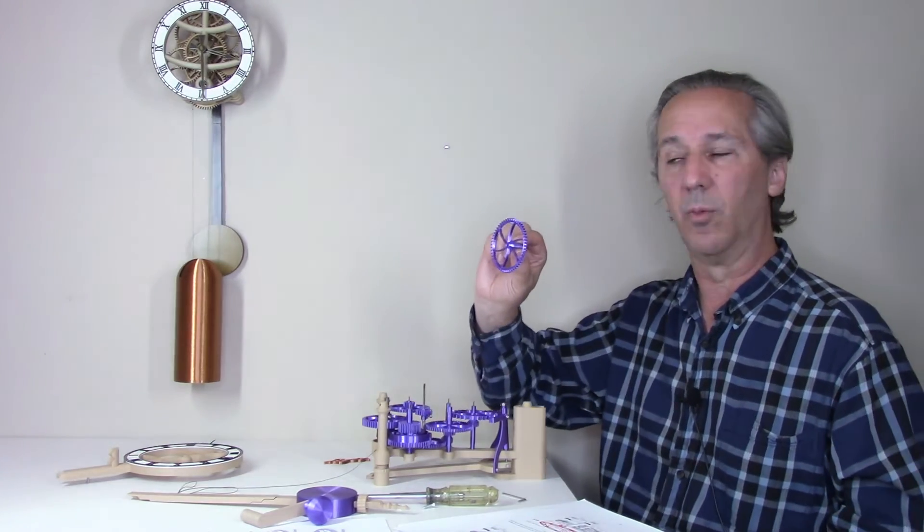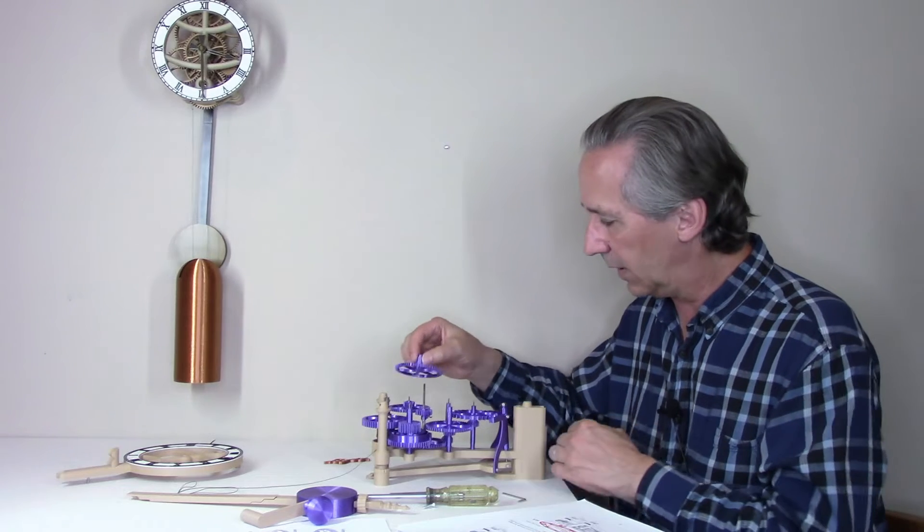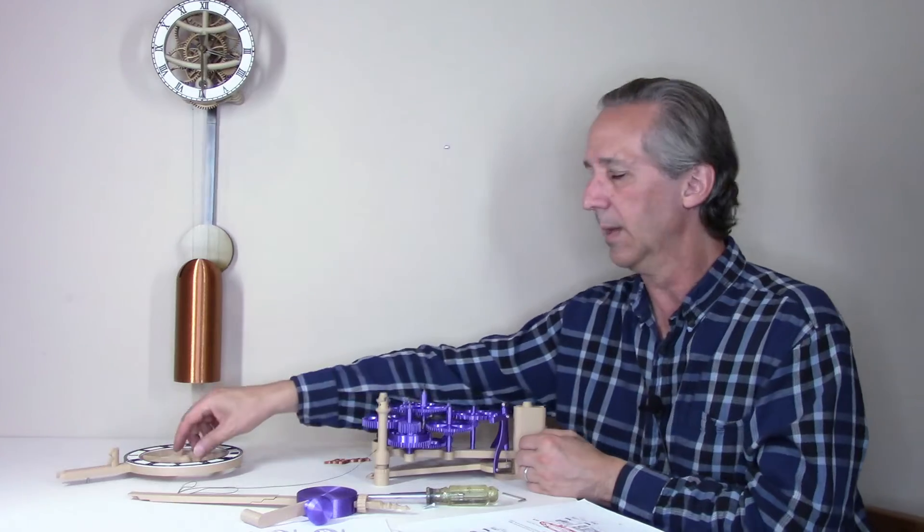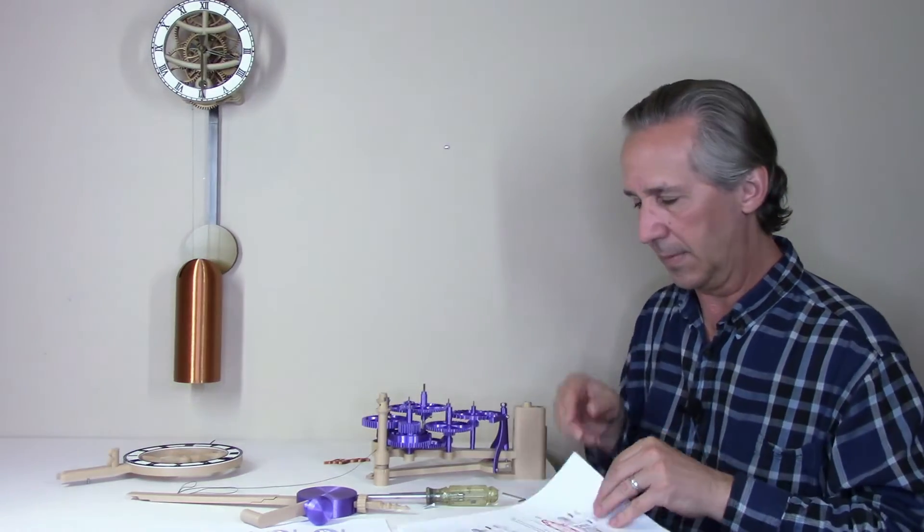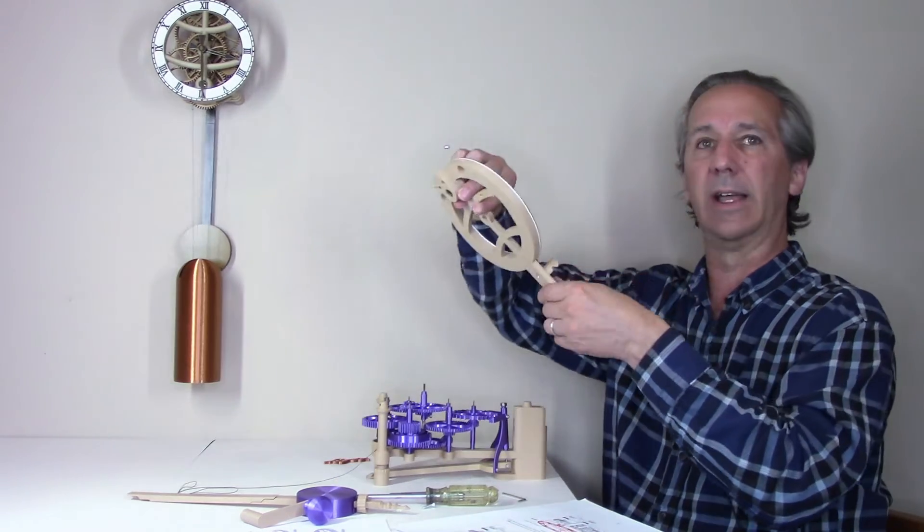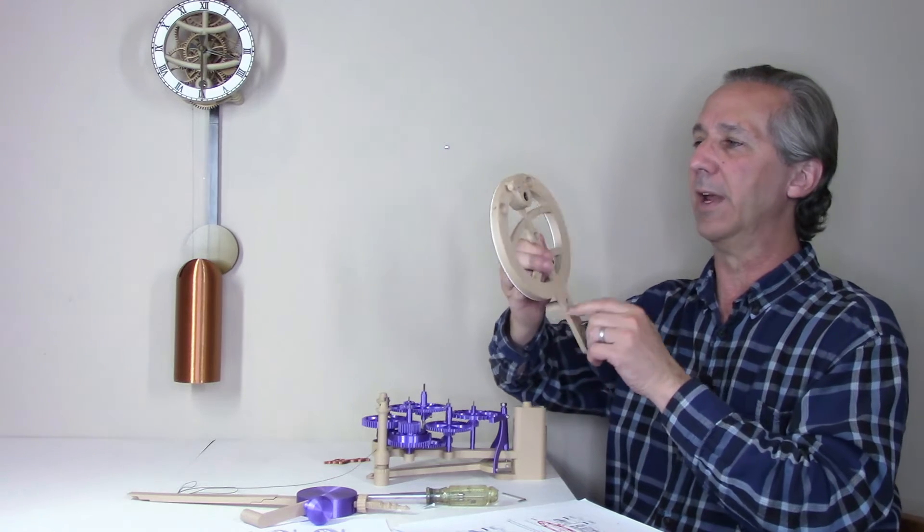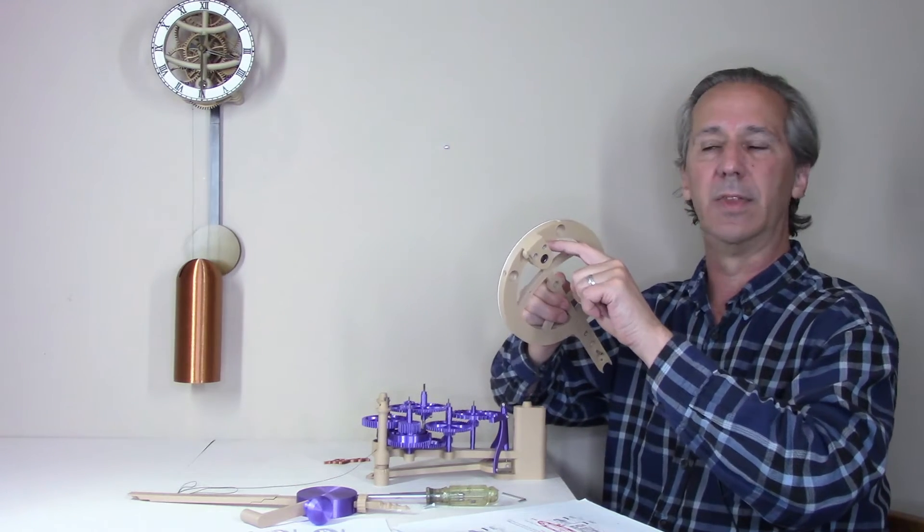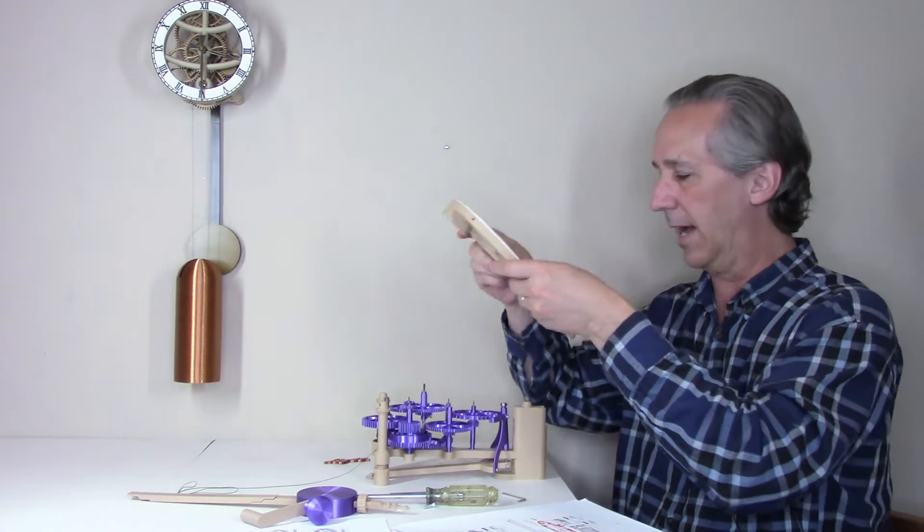I've only got one gear left which is gear 6 that goes on the central arbor. At this point I can add the front dial and I've already added the bearing holder onto the front dial.